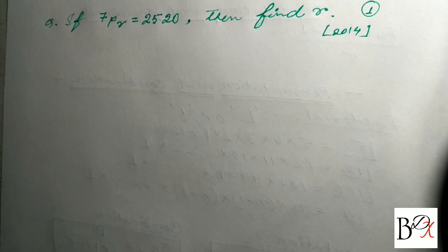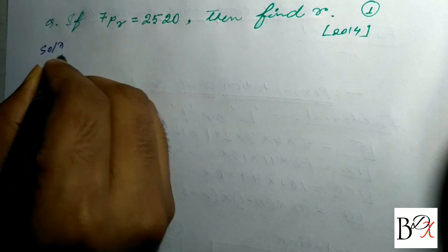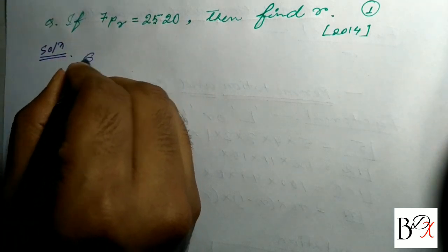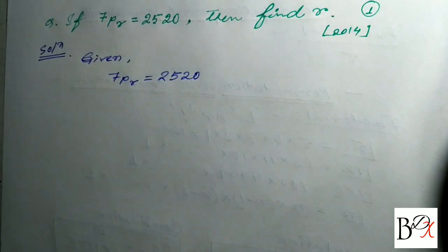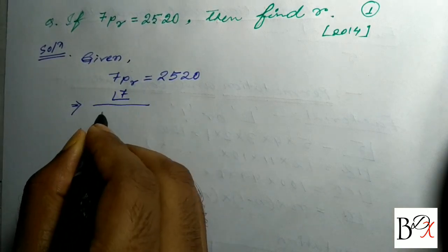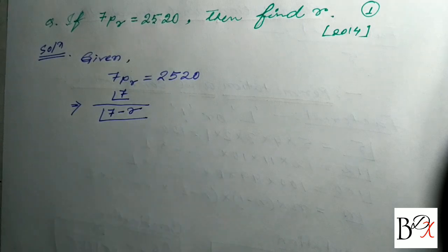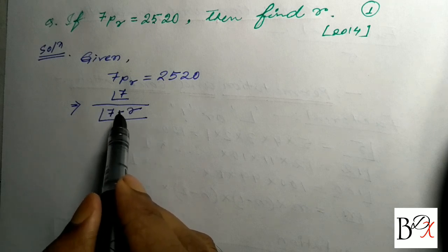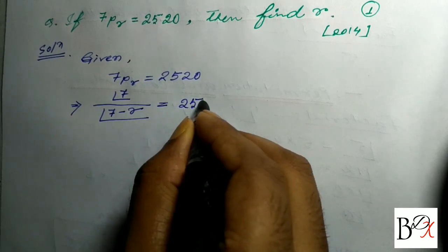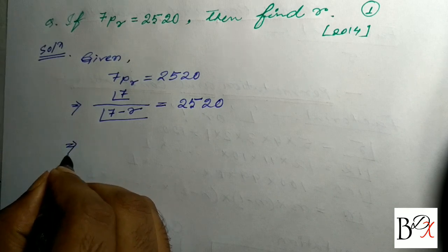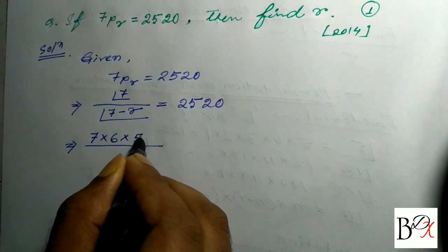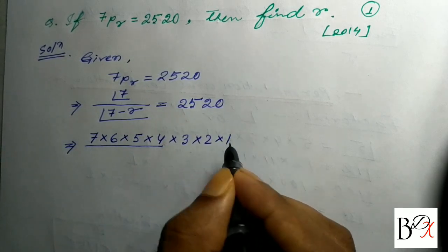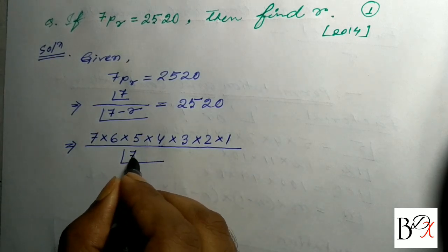The question is from the 2014 final exam: If 7PR is equal to 2520, then find R. This is a one-mark question. Solution — given: 7PR is equal to 2520. Now, 7PR equals factorial 7 divided by factorial (7 minus R). This is our permutation formula: factorial N divided by factorial (N minus R).